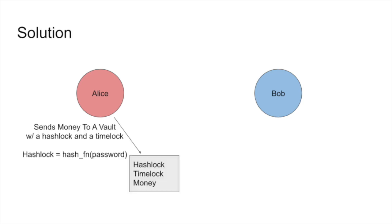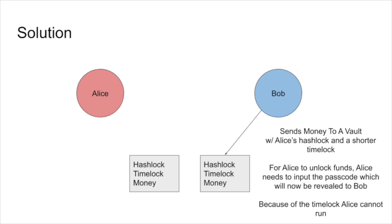Instead, Alice could send money to a vault and lock it with a password. This password is represented by a hash lock on the blockchain. The hash lock is just a hash function of the secret passcode. When Bob sees Alice locking her funds onto the vault, he knows Alice's hash lock.